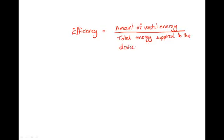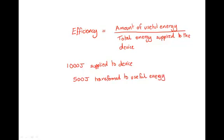So if we work through an example of 1,000 joules being supplied to the device. And of that 1,000, 500 is useful energy. So of the 1,000 joules being supplied, 500 joules is the useful energy. And then we can work out the efficiency by the top part, the amount of useful energy, which in this case, it's the 500 joules. That's the useful energy.